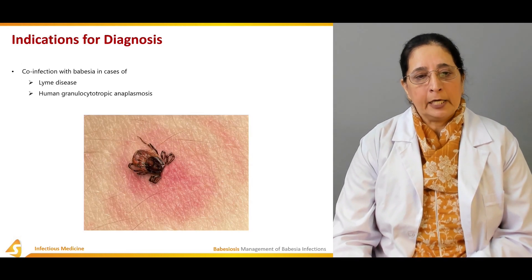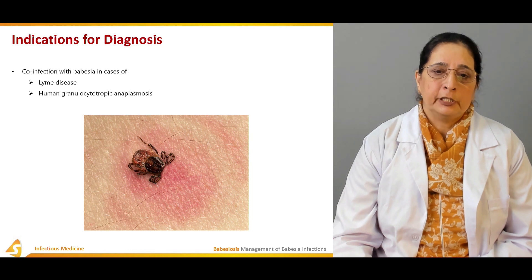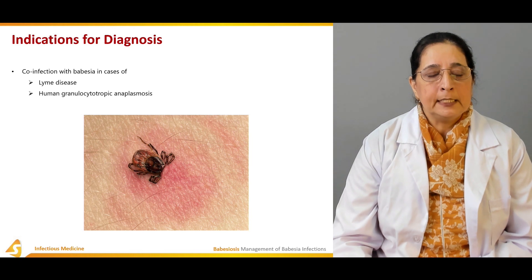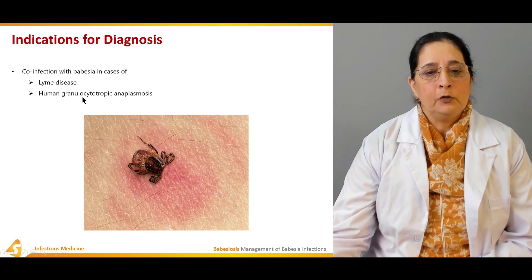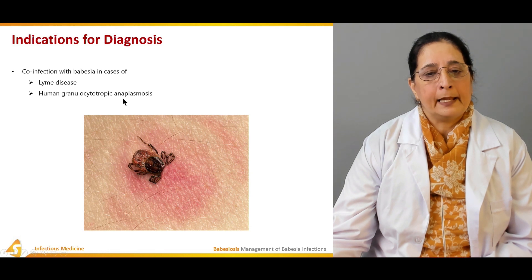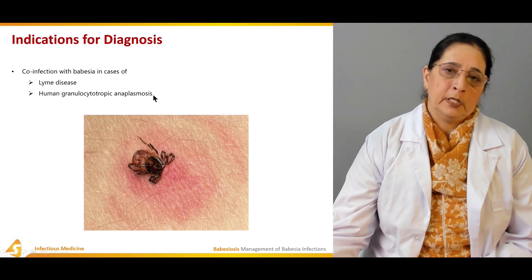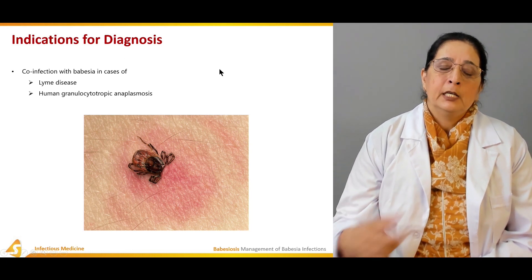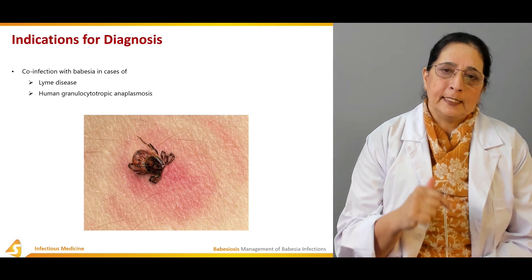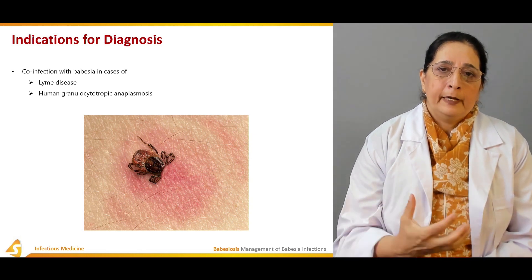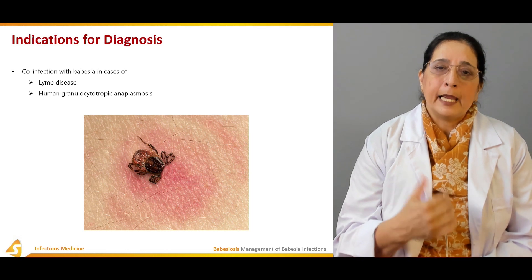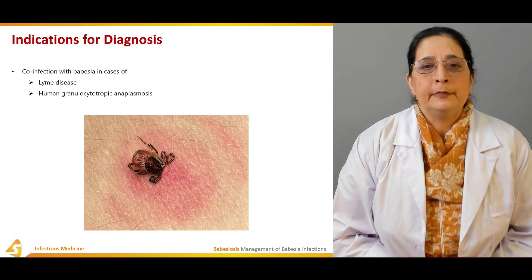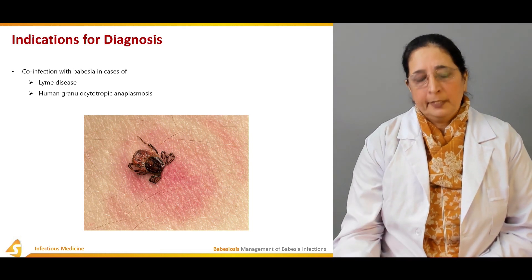Another indication for diagnosis is co-infection with Babesia in cases of Lyme disease and human granulocytotropic anaplasmosis. Especially if erythema migrans is present — which is very significant in Lyme disease — it means there is associated Lyme disease along with babesiosis.